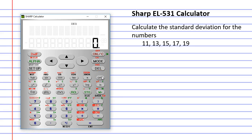In this tutorial, we're going to learn how to calculate the standard deviation using a Sharp EL-531 calculator. And we're going to do it by entering the following five data values into the calculator: 11, 13, 15, 17, 19.